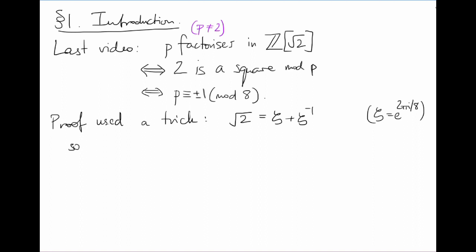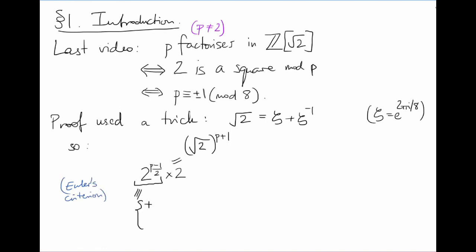This then allowed us to evaluate root 2 to the power p plus 1 in two different ways mod p. On the one hand, it's 2 to the (p−1)/2 times 2. Mod p, Euler's criterion tells us that this first factor is exactly plus or minus 1, depending on whether 2 is a square mod p. So in total, we get plus or minus 2.